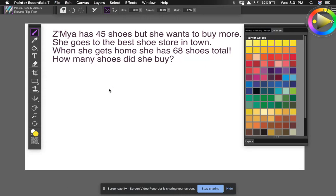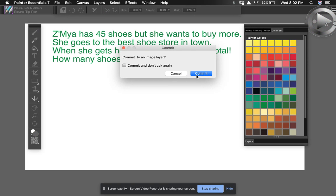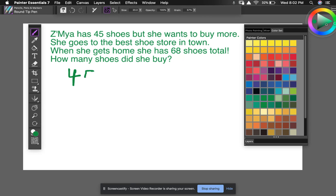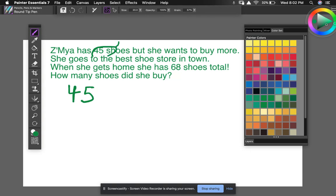So this gets a little confusing because the unknown is in the middle, but as long as we still use our tens and ones place value as a tool, we will be just fine. So let's go ahead and go to this problem right here. Zamaya has 45 shoes, but she wants to buy more. She goes to the best shoe store in town. When she gets home, she has 68 shoes total. How many shoes did she buy? So let's make a movie in our brain first so that we know where to put the different numbers in our number sentence in the equation. So Zamaya has 45 shoes. She wants to buy more. So I'm thinking that that number is at the beginning. So let's do that and I'll turn green. 45 at the beginning. I'm going to circle that in green.